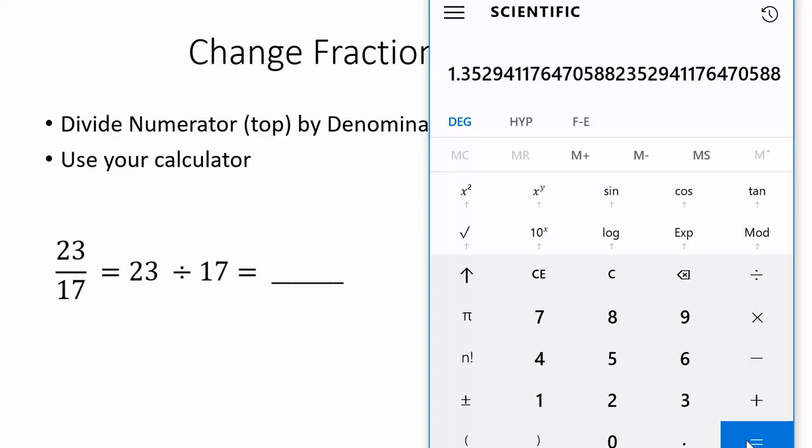You might notice a couple things about this answer that are different than the last example. First, this is a number bigger than 1. That's okay because the top is bigger than the bottom in our fraction. The other thing to notice is that this decimal has lots of numbers and continues off my calculator screen. I do not want you to write down 1.352941176470588. That's really long. We're going to have to round this.